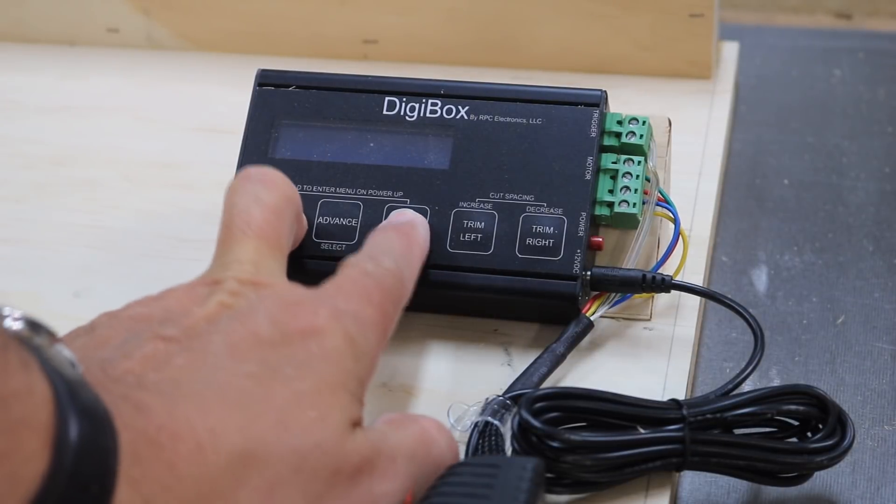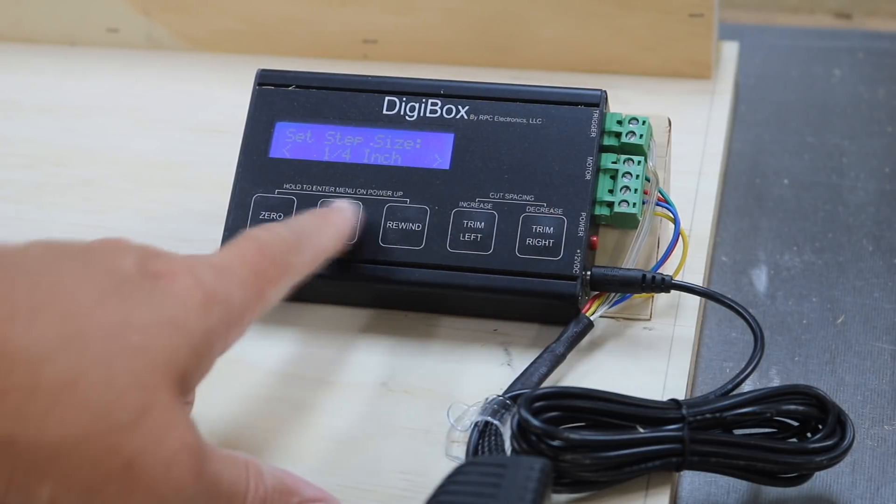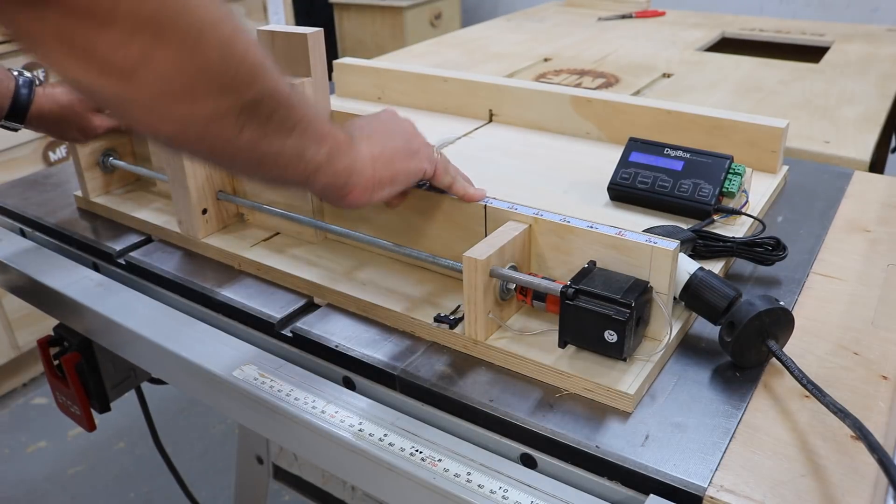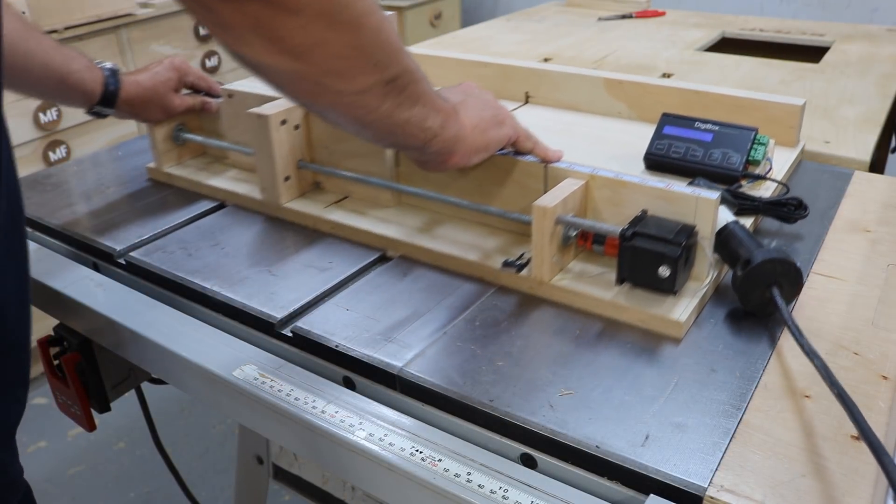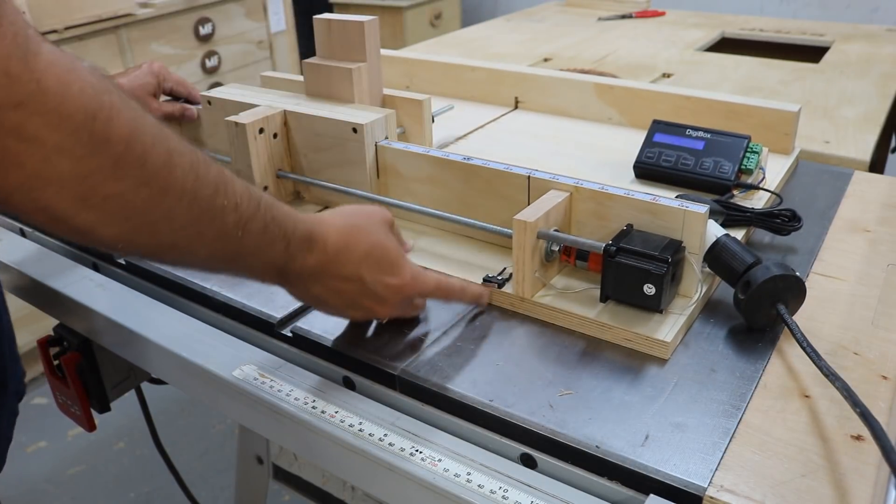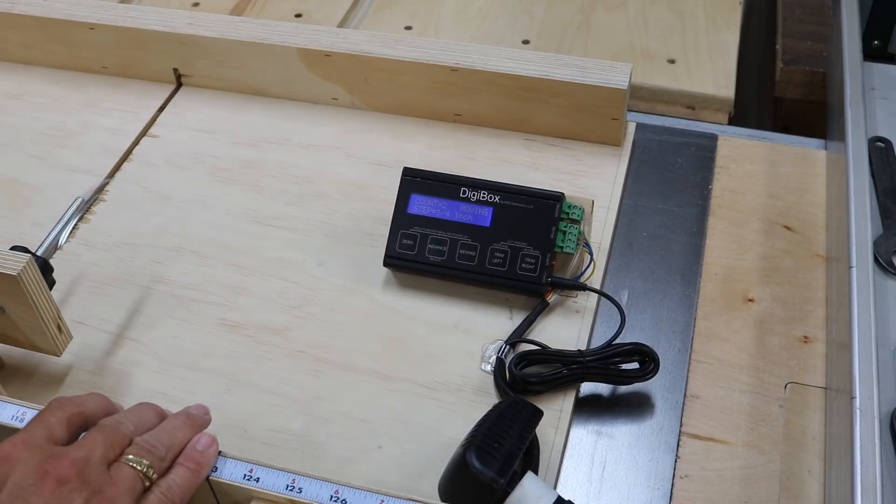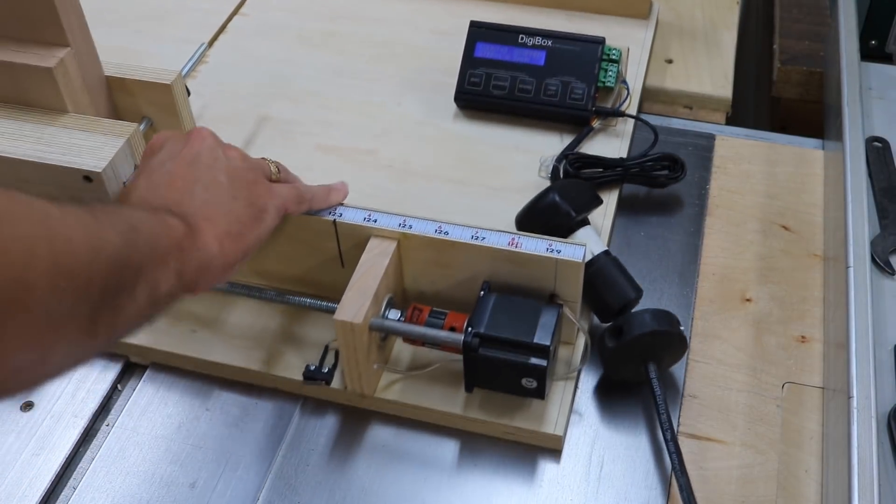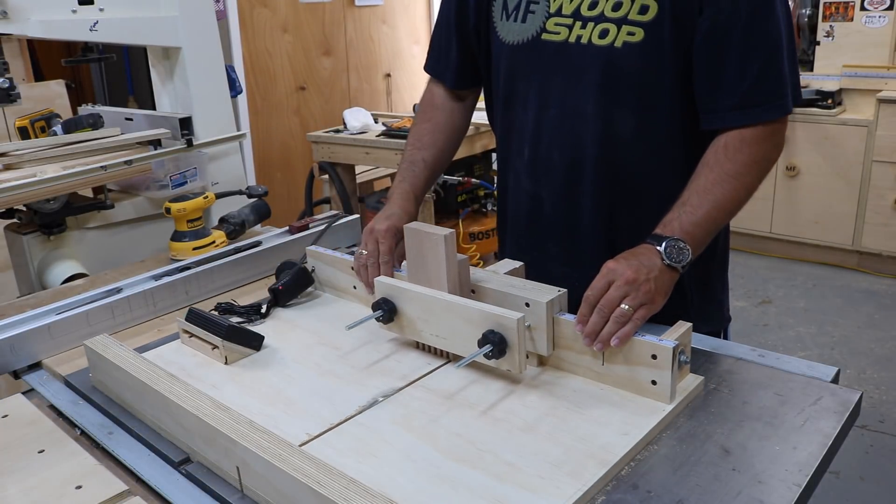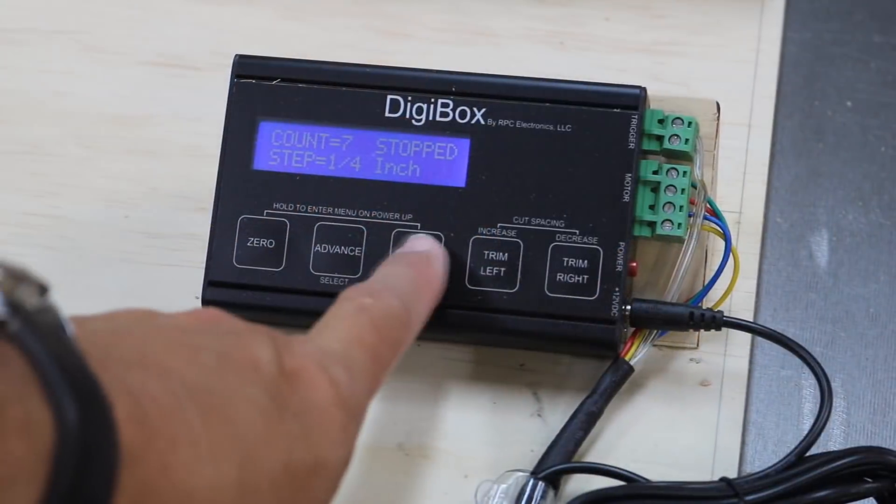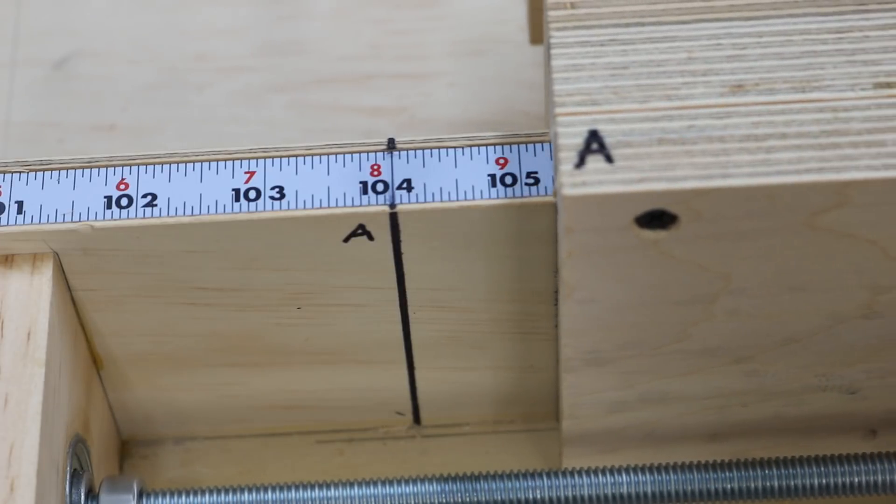Now the Digibox controller is very simple to use. You can hold down the zero button and the rewind button as you power up, and then select the appropriate size that you want. To advance the jig while you're working you can either hit the advance button, or if you hooked up the limit switch you can actually hit the limit switch as well. To reset back to the beginning just hit the rewind button it goes right back to where you started.